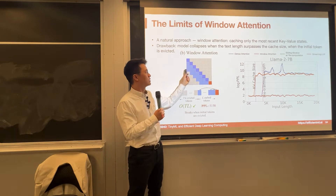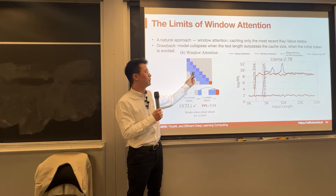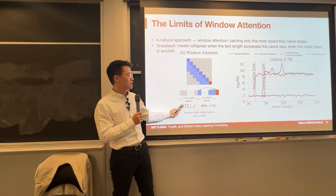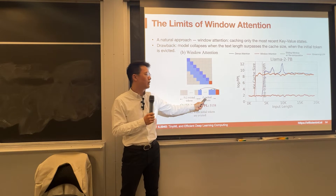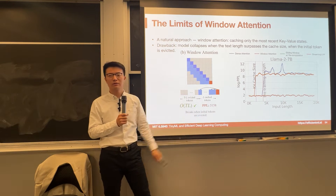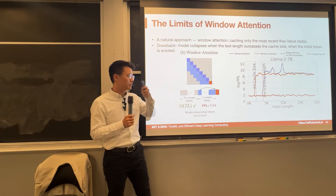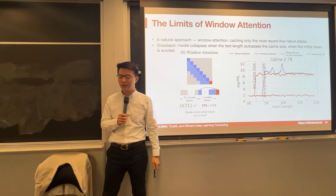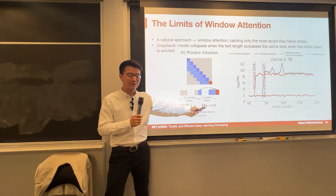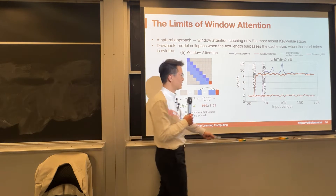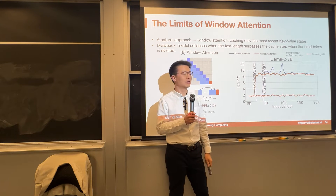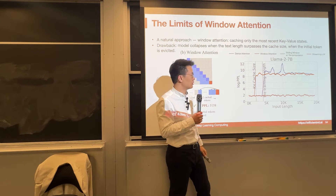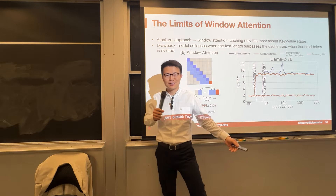For every token, you just look at, say, a window size of four — just look at four elements ahead of you rather than looking at everything in front of you. So in this case, the complexity is T times L, where L is the number of cached tokens and T is the number of total tokens. But the perplexity is huge — as soon as we exceed the KV cache size, even exceeding the window, the first token will be evicted and the model will immediately break.